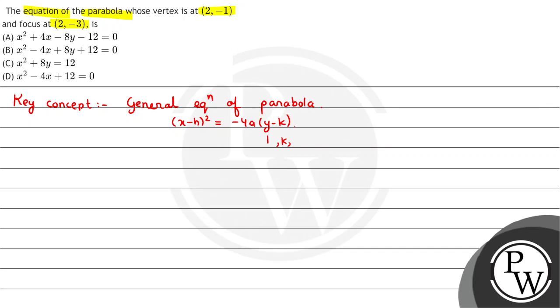Here h and k - the point (h,k) is the vertex. And a is the distance between vertex and focus.